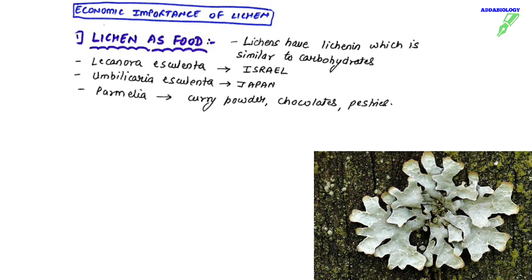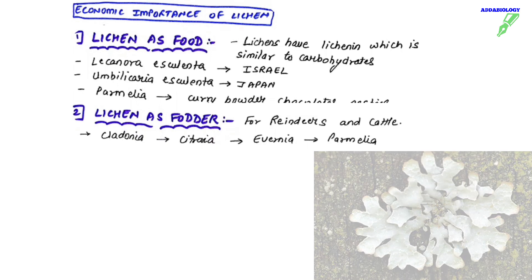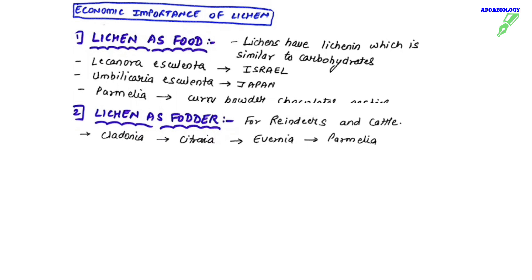Umbilicaria esculenta is used as food in Japan. Parmelia is used in curry powder, chocolates and pastries. As fodder, in cold countries where no grasses are available, reindeer and herbivorous cattle use lichens as a source of fodder. Examples include Cladonia, Cetraria, Evernia, and Parmelia.